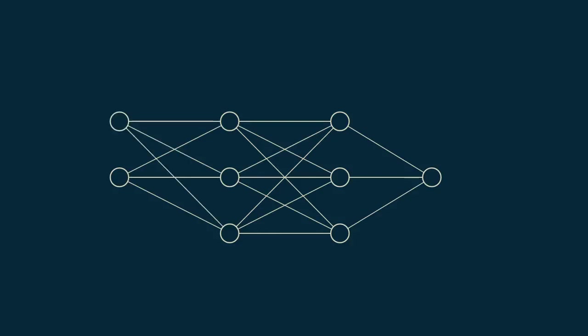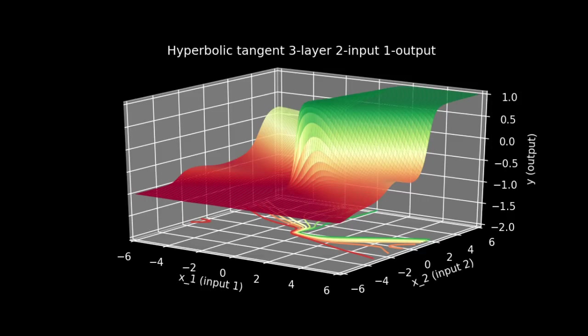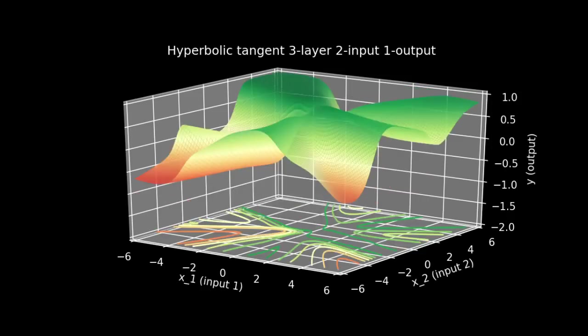We can also take a look at a two-input, single-output neural network. Because it has two inputs, when we plot its outputs, it will be a three-dimensional curve. We can once again choose random weights and generate curves to see what types of functions this neural network might be able to represent.